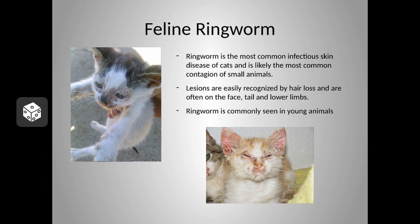Lesions are easily recognized by areas of hair loss. These are often rounded and are present on the face, tail, and lower limbs. The hair shafts are easily epilated, and the hair breaks off at the skin due to damage of the hair shaft. If left untreated, most immunocompetent animals eventually eliminate the infection. Dermatophytosis can occur in any age animal, but it is most commonly seen in young, old, and debilitated animals.